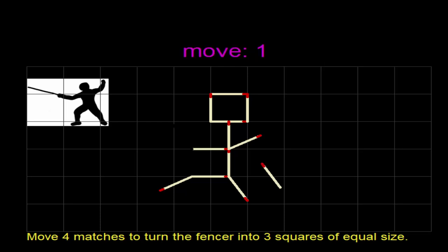Move number one: moving the arm as you can see there to the right. Move number two: part of the leg is moving to another position. Move number three: another arm. And finally, move number four: moving the neck. So we do have our three small squares, don't we, of equal size. We're able to figure that one out.